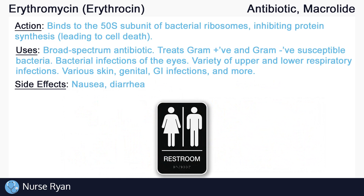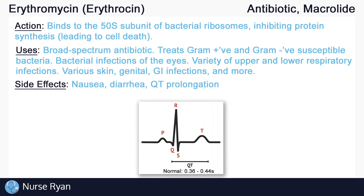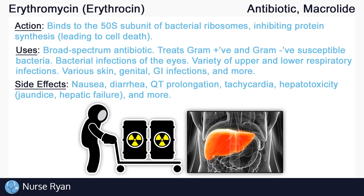Erythromycin, along with many antibiotics, may cause nausea and diarrhea. Antibiotic-associated diarrhea, which is usually three or more loose, watery stools per day, is common when starting many antibiotics. Diarrhea should improve once the antibiotic is complete, but this is not always the case. It is always important to consult your doctor before taking any anti-diarrheal medications while taking erythromycin, as they can actually worsen the problem. Although rare, erythromycin can cause QT prolongation, which could be seen on an ECG, and tachycardia, which is an abnormally increased heart rate. Erythromycin may also cause hepatotoxicity, which can present as jaundice and hepatic failure.